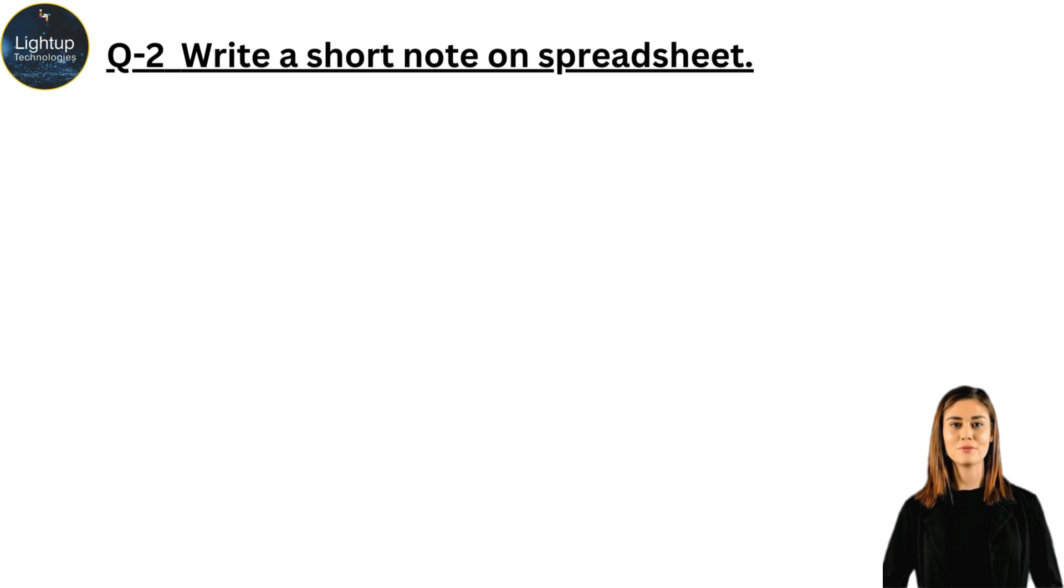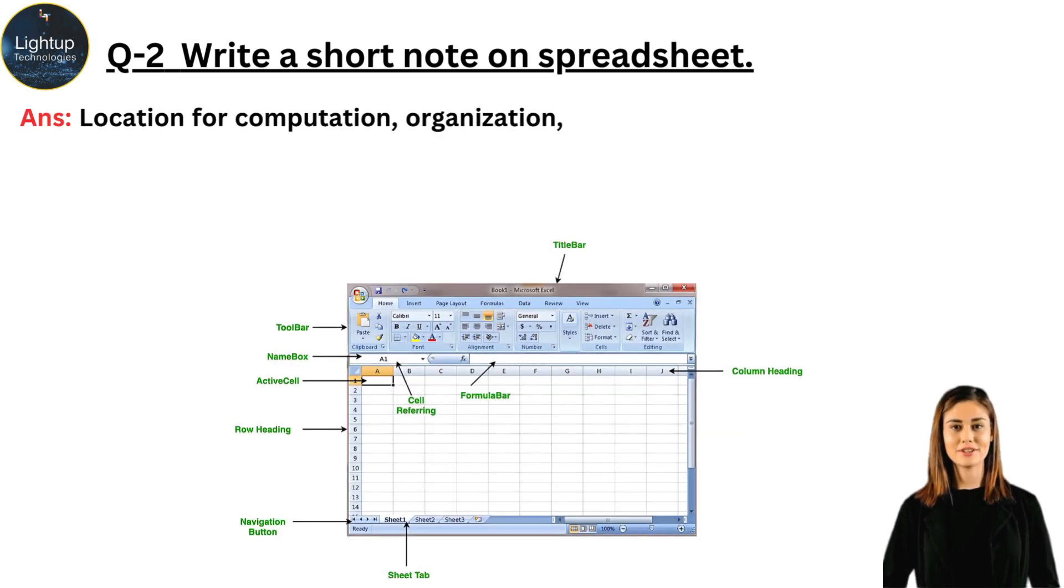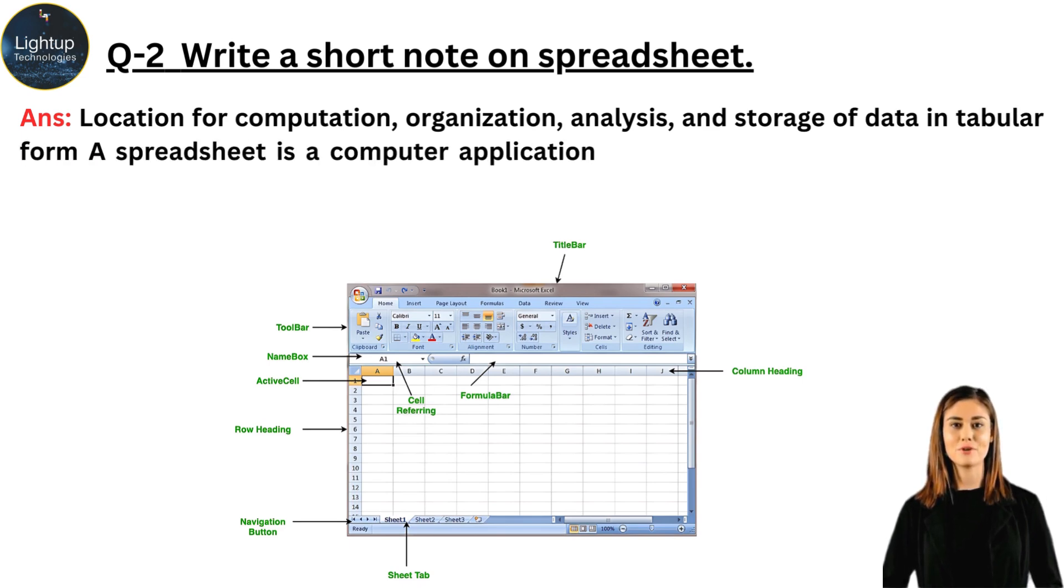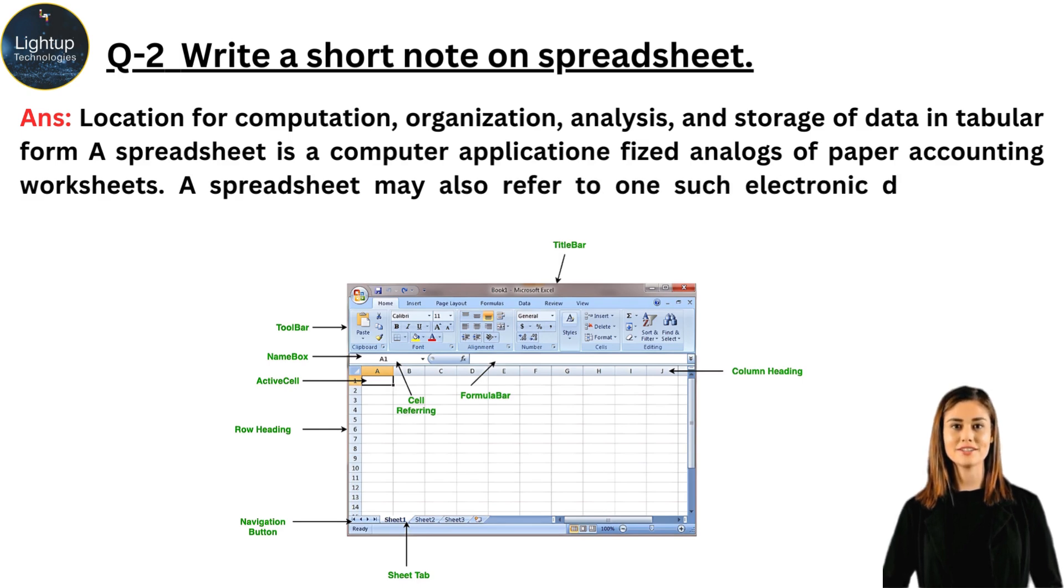Write a short note on Spreadsheet. Location for computation, organization, analysis, and storage of data in tabular form. A spreadsheet is a computer application-based analog of paper accounting worksheets. A spreadsheet may also refer to one such electronic document. A collection of worksheets is known as a spreadsheet.